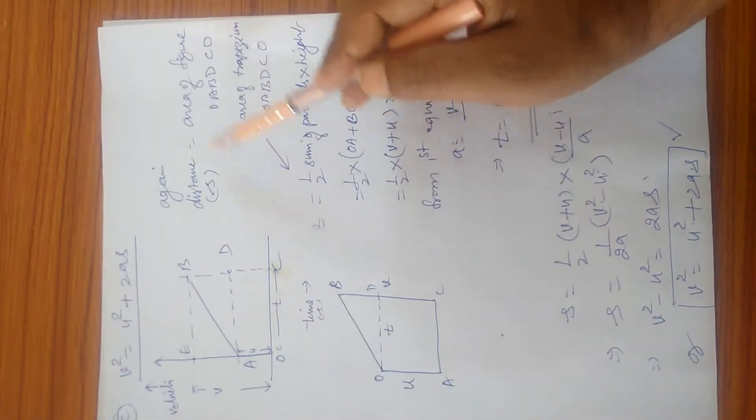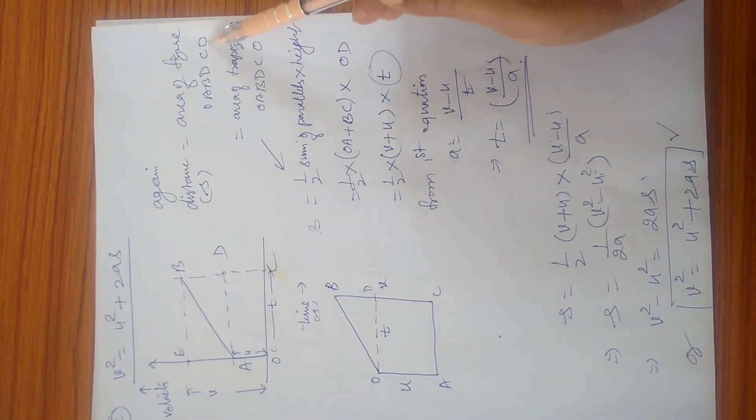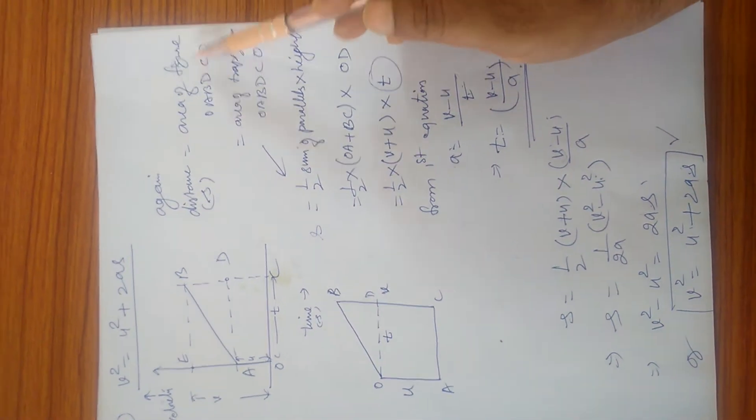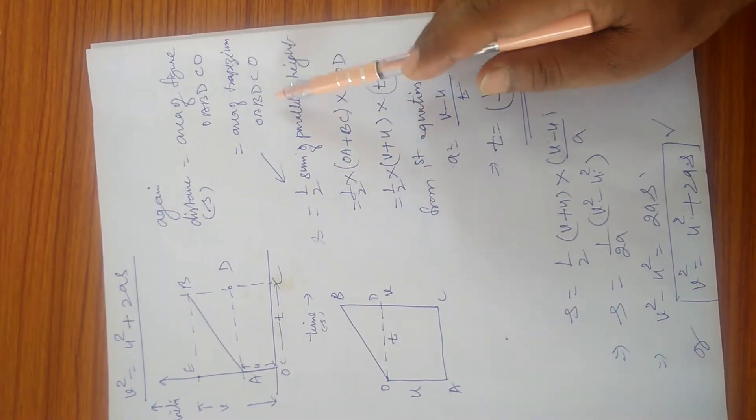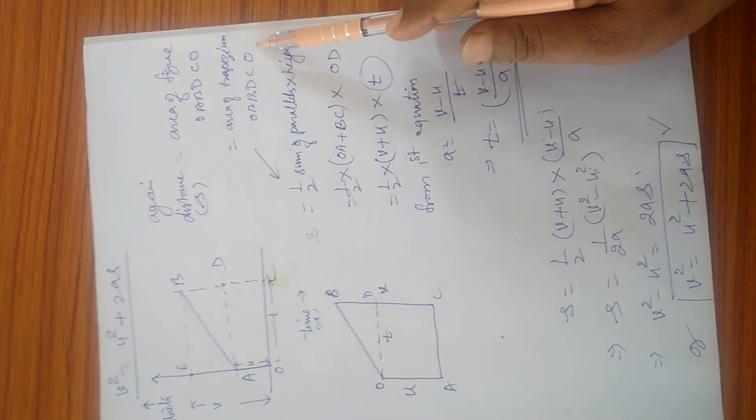So s equals the area of figure OABDCO. This is a trapezium, so s equals the area of trapezium OABDCO.